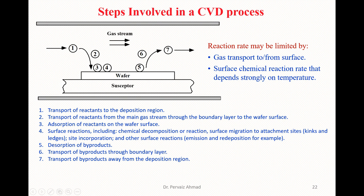The last step, step number seven, is the transport of byproducts away from the deposition region. Sometimes we utilize a catalyst during the synthesis process; once it performs its reactions, it is recovered and carried away by the gas stream — typically argon or another inert gas — which transports the byproducts away from the deposition region. These are the sample steps involved in a typical CVD process.